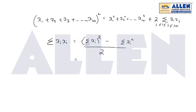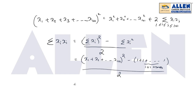Now summation of xi·xj = [(x1 + x2 + ... + x101)² minus summation of xi²] upon 2. Since each xi lies between +1 and -1, the only possibilities are +1 or -1. So whatever value xi takes, its square will be 1. Therefore summation of xi² = 101, giving us [(summation xi)² minus 101] upon 2.